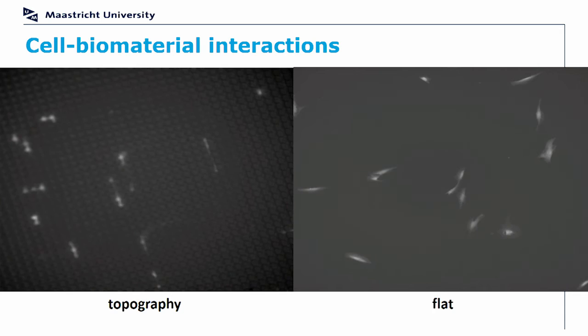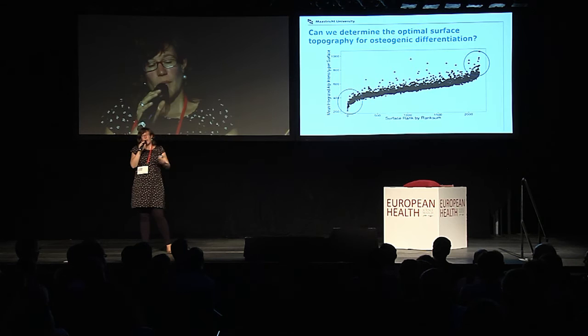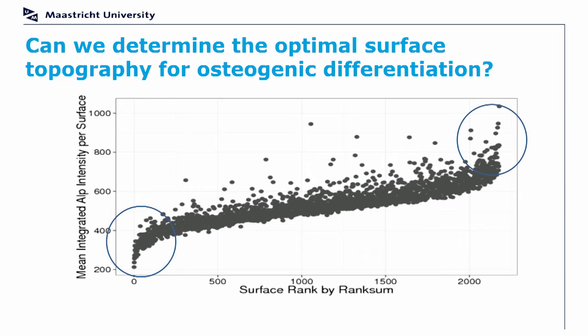We perform a particular screen where we put cells on this chip — like a microarray — and we can stain these cells, for example for an osteogenic marker as we did here, so we can see which surfaces induce a high expression or not.